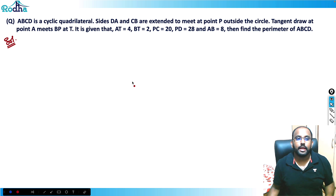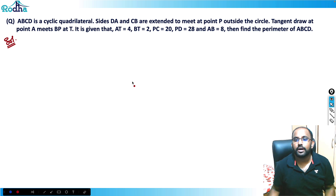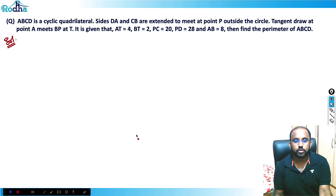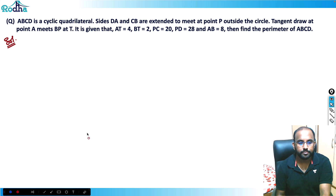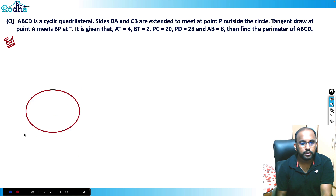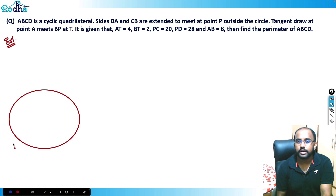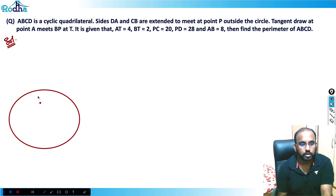It says that ABCD is a cyclic quadrilateral and DA and CB are extended to meet at point P outside the circle. Let's draw this cyclic quadrilateral first — draw the circle, then the two lines extended to meet, something like this.